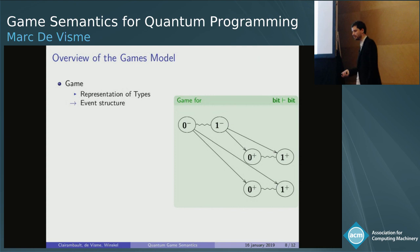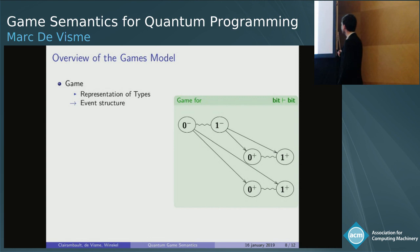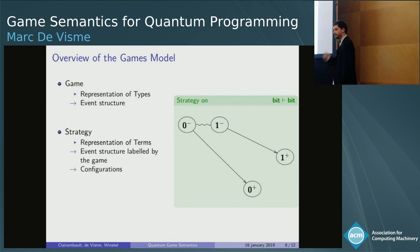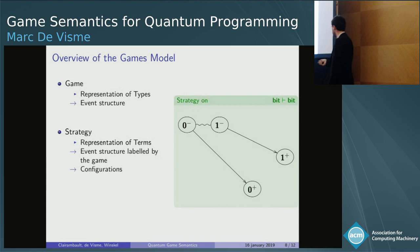Now I will give a quick overview of what a game model is and what our game model is. In game semantics, we represent types by games. Games will represent every computational event of the type. For example, if you take bit under the context bit, you will have two events here because the context can be either false or true — they cannot both occur at the same time, and they are negative because that's information given by the context. Then you have some causality relation. The term will be able to evaluate at either false or true, not both at the same time, and those are positive events because that's information created by the term. To represent terms, on top of that we have a strategy — a strategy is the same kind of structure where every event of the strategy corresponds to an event of the game because the term has to be well typed.